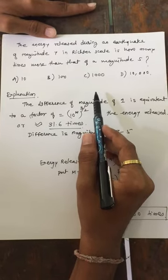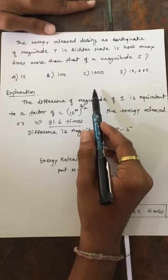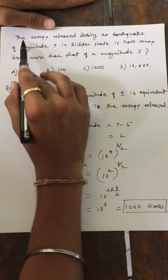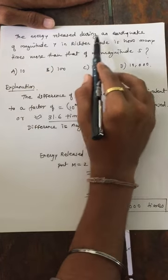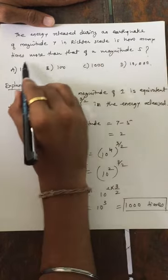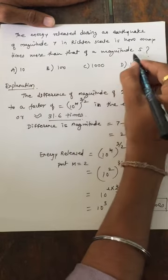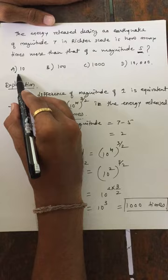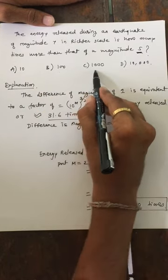How to calculate the energy released when magnitude is given? The question is: the energy released during an earthquake of magnitude 7 in Richter scale is how many times more than that of a magnitude of 5? Options are A) 10, B) 100, C) 1000, and D) 19,690.